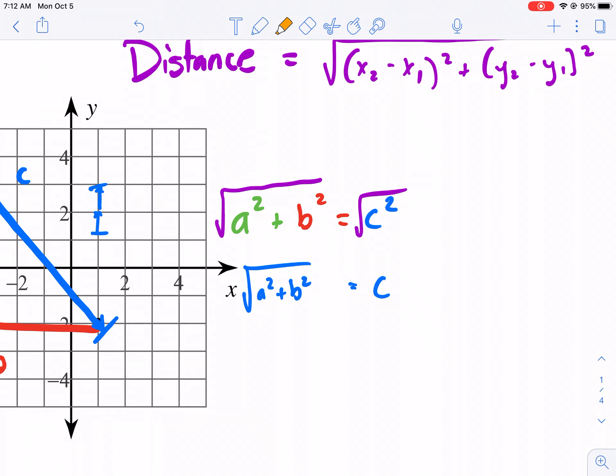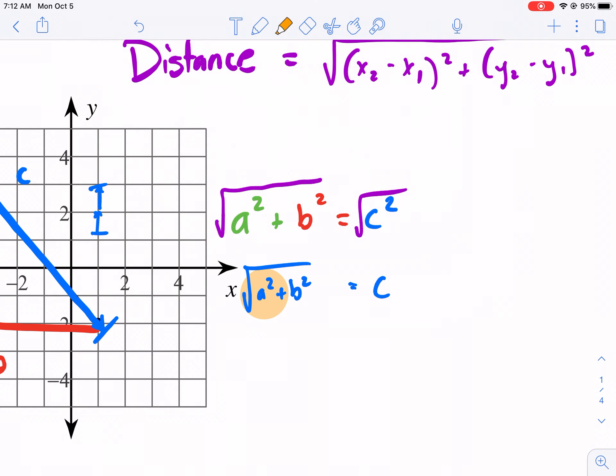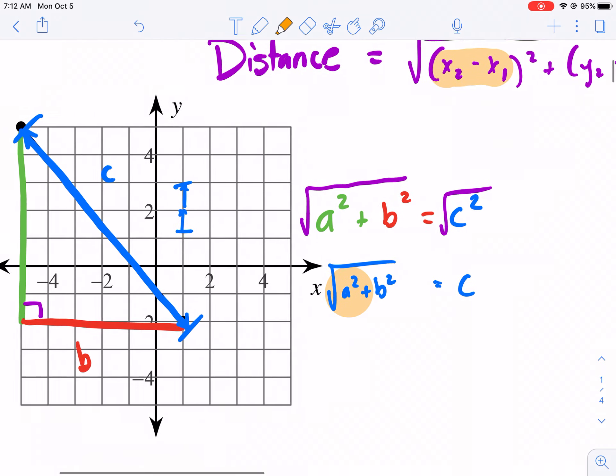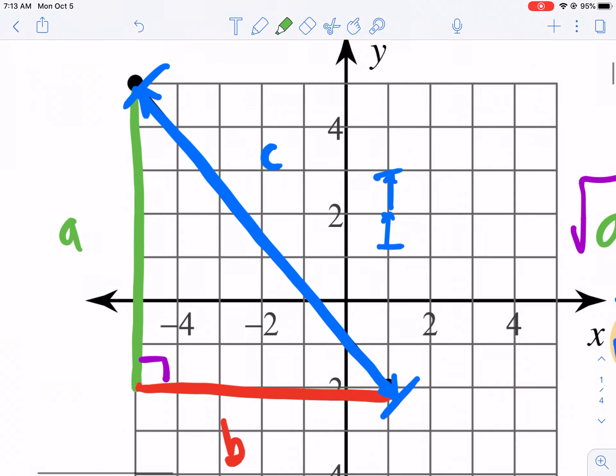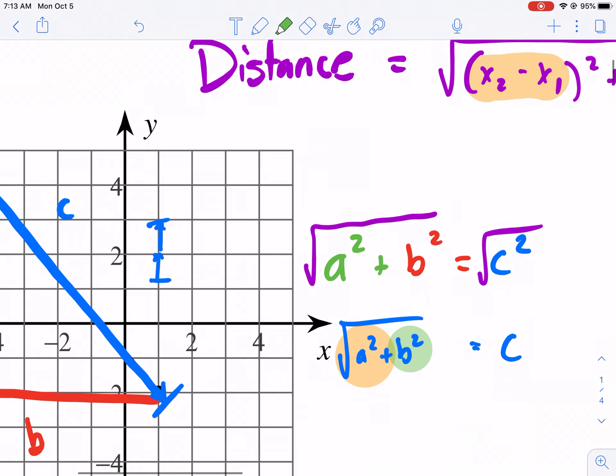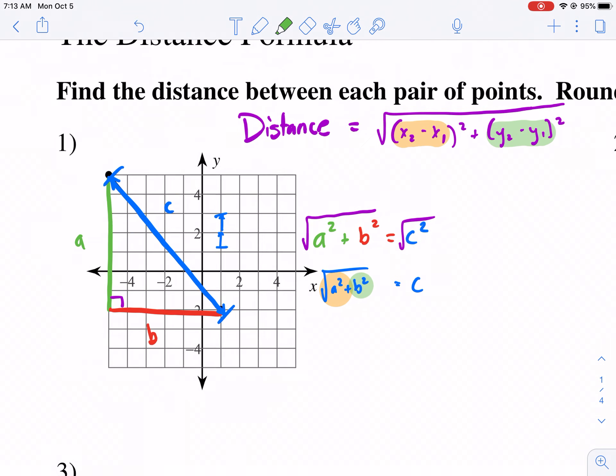And then we get c by itself. That's the same thing as distance. c equals that distance. And we have the square root of a squared plus b squared. That's the distance formula. The only difference is instead of writing a, we're writing x2 minus x1, and instead of writing b, we're writing y2 minus y1, because that will tell you on the coordinate plane if you subtract those two points, it will tell you the distance of those two legs of the triangle. So that's essentially where it comes from.